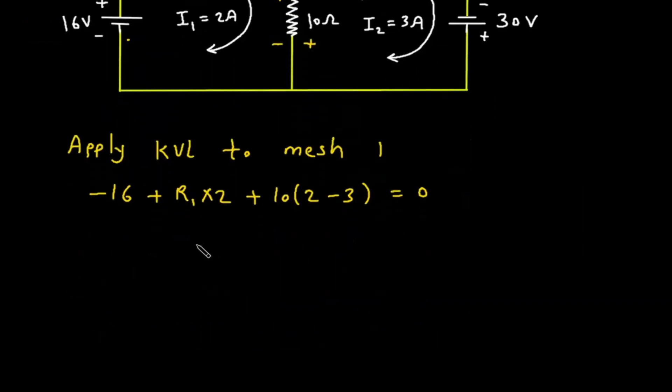So this will be 2R1. Then this will be plus 2 minus 2 minus 3 is minus 1. So minus 1 into 10 is minus 10. Then is equal to, if this 16 goes on right side, so this will be plus 16. So 2R1 is equal to 16 plus 10.